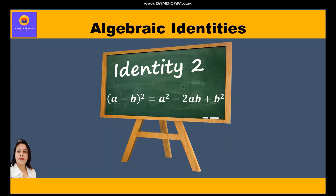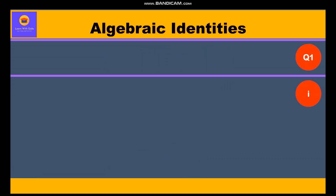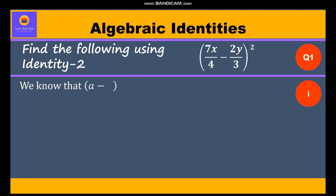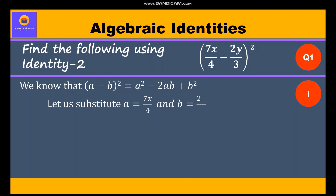We shall take up the first type of question related to identity 2. It is given: find the following by using identity 2. The first part is (7x/4 minus 2y/3) whole square. We know that (a minus b) whole square equals a squared minus 2ab plus b squared. Let us substitute a equal to 7x/4 and b equal to 2y/3 in identity 2.